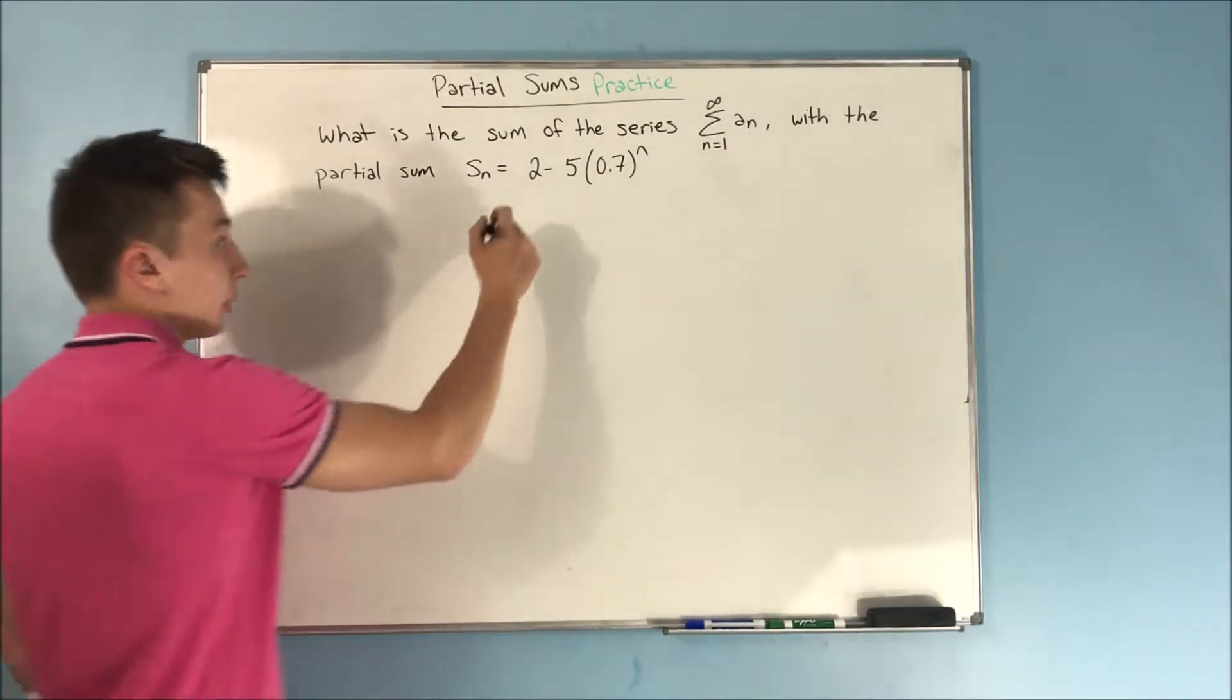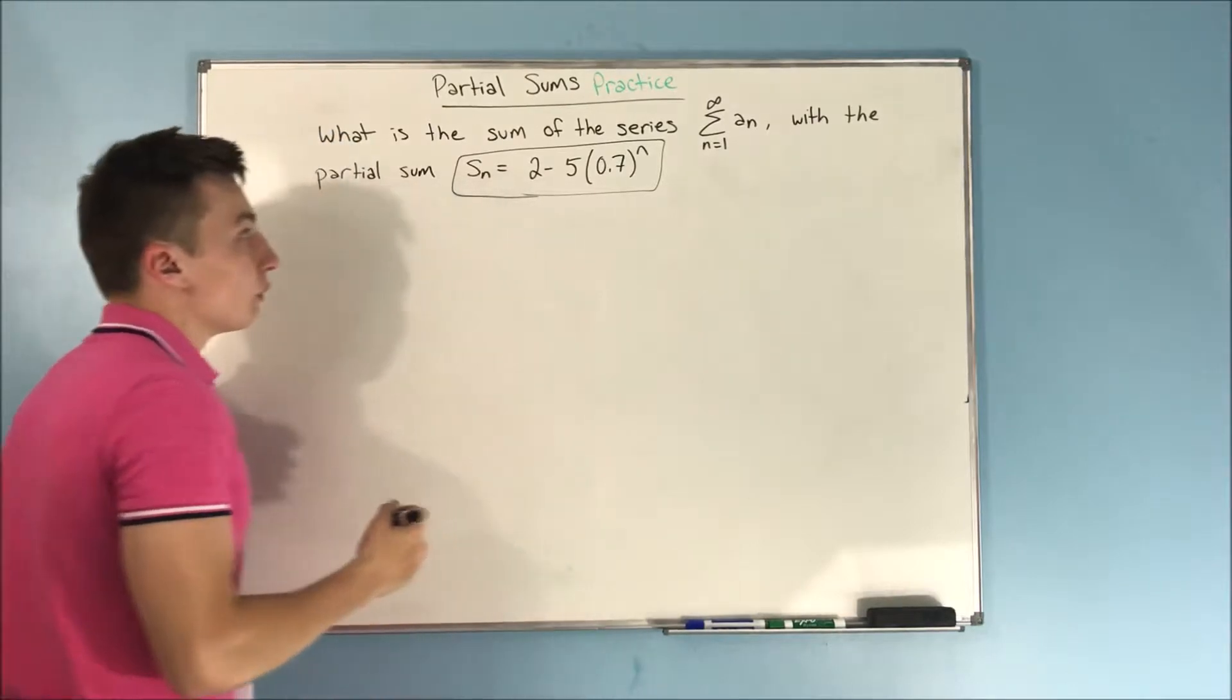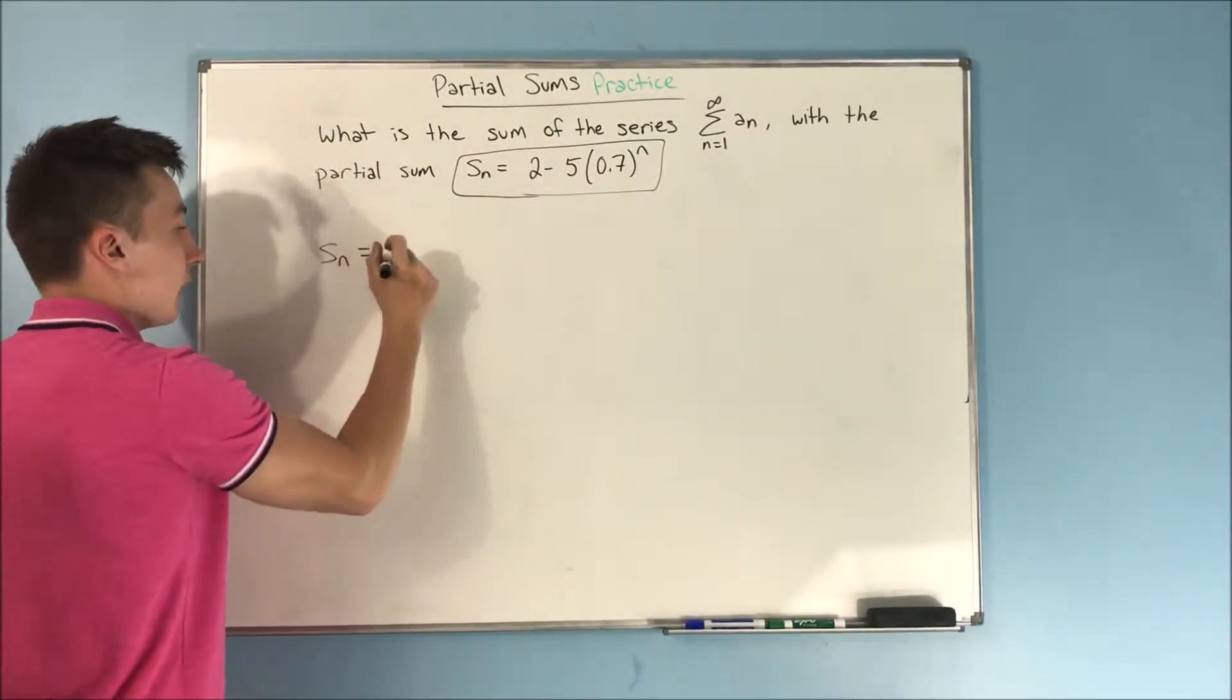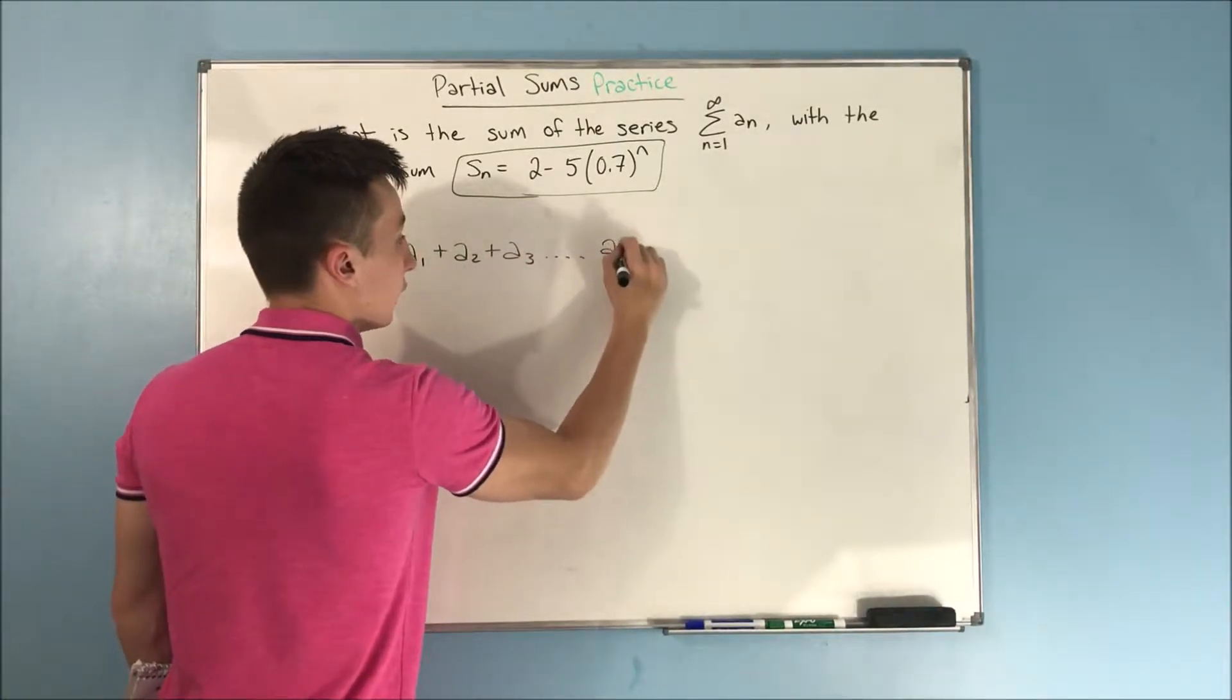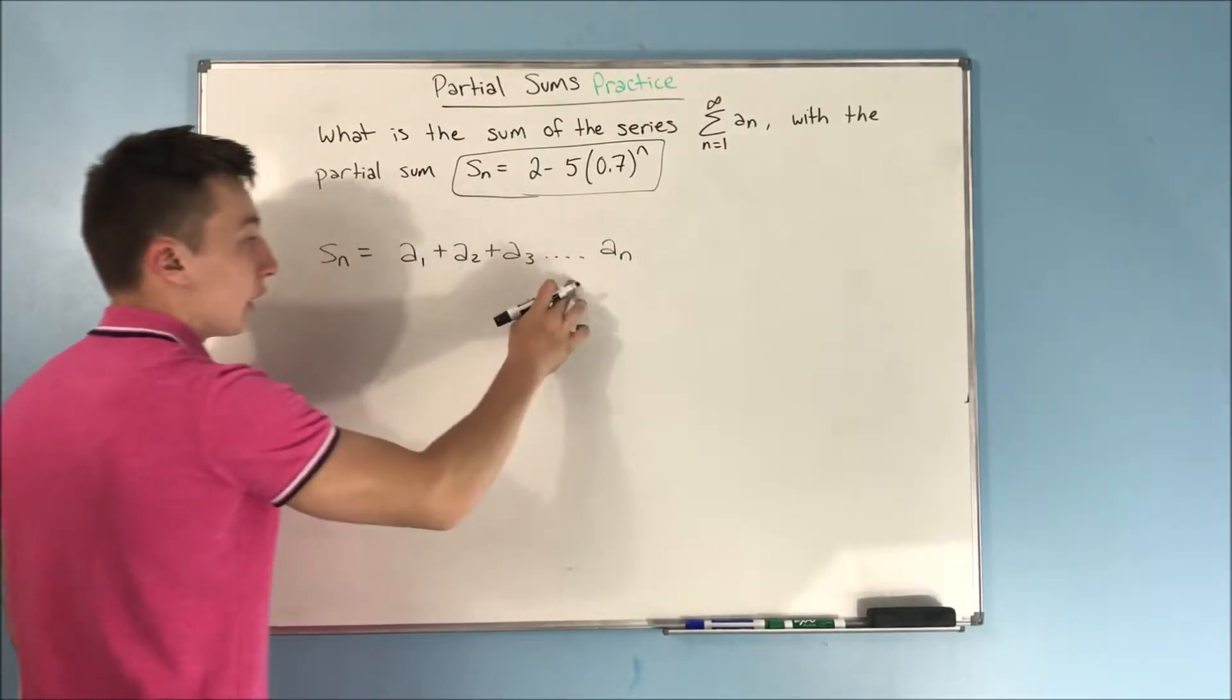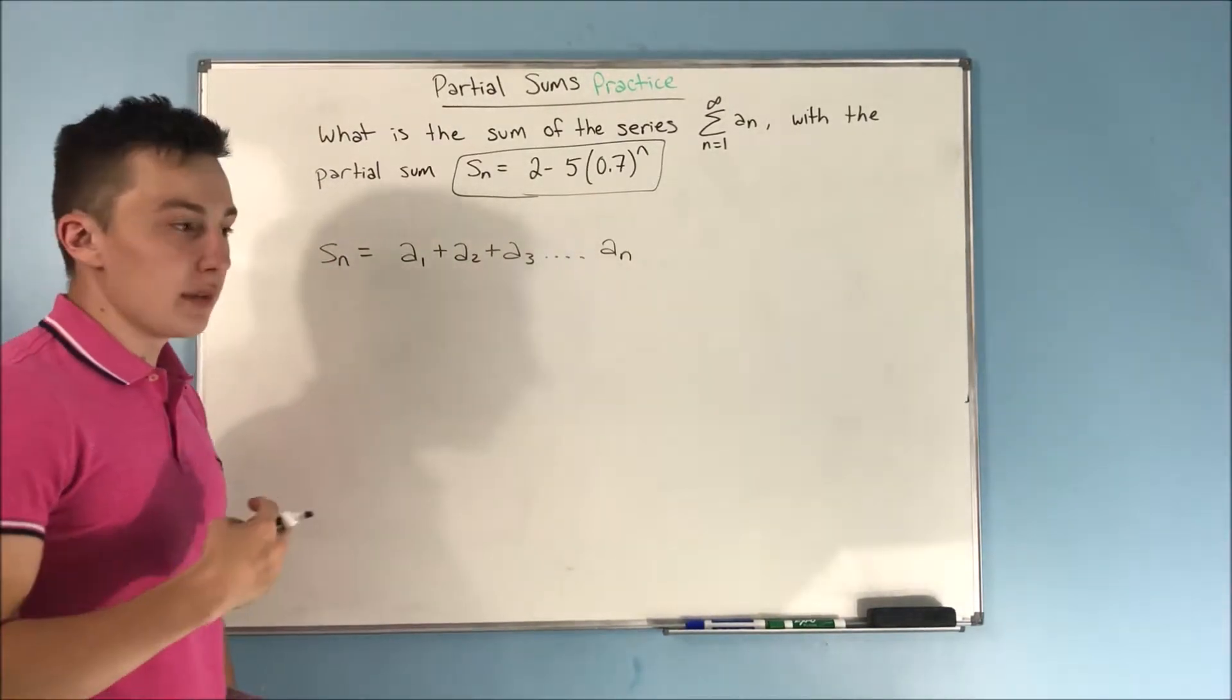So here we have that partial sum, and what that's telling us, if you remember, is a sub 1 plus a sub 2 plus a sub 3 on and on and on to a sub n. That's telling us the sum up to that point, to the nth term.